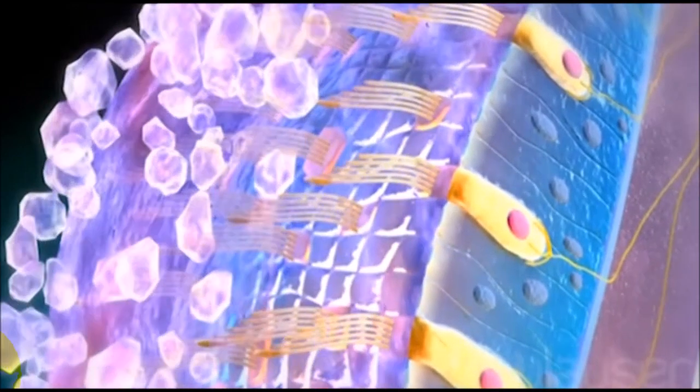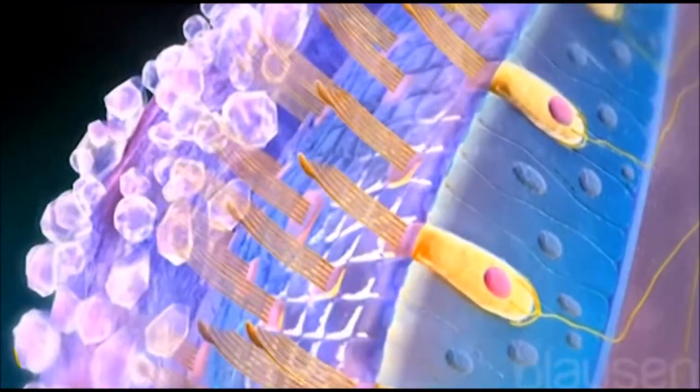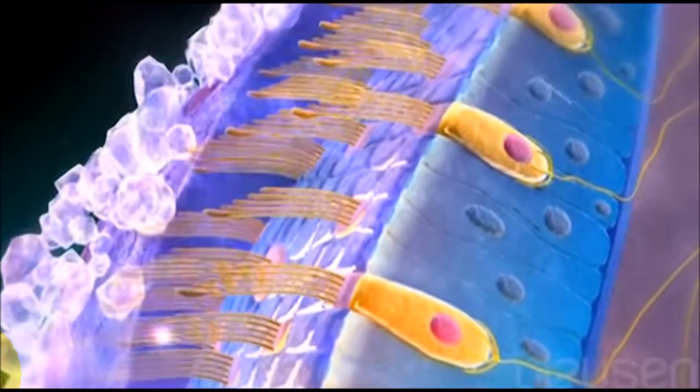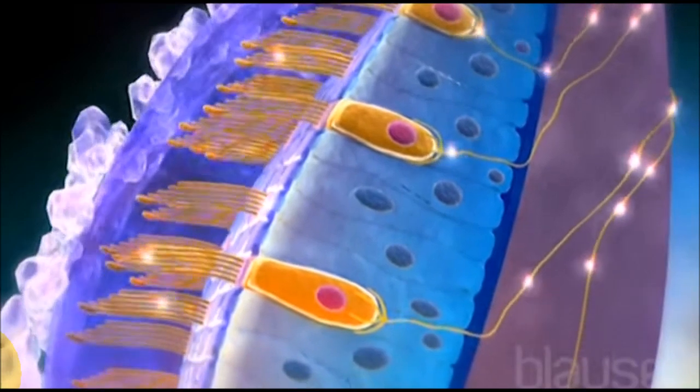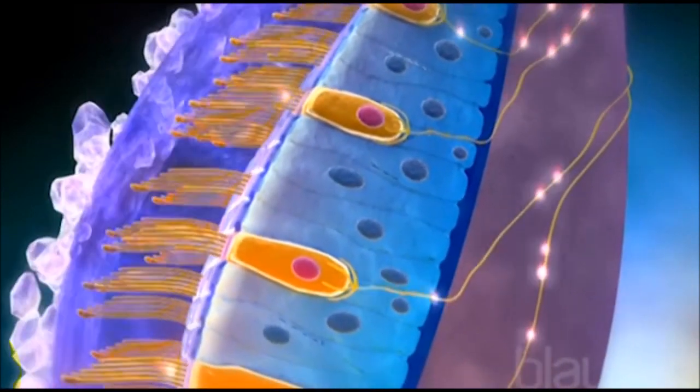When the head tilts, gravity moves the crystal mass and distorts the stereocilia of the hair cells. This is how the saccule and utricle provide information about position with respect to gravity.